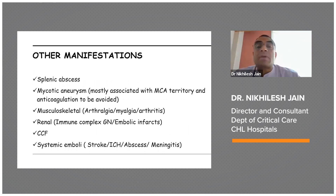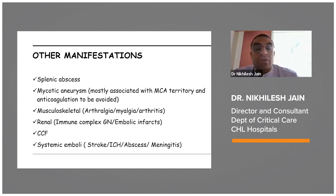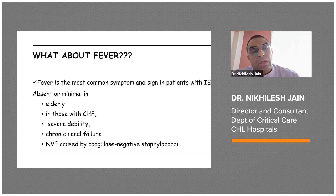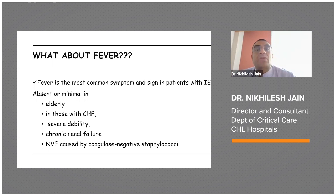Embolic digital infarcts and Roth spots — oval retinal hemorrhages — can occur. Other manifestations include spleen involvement, mycotic aneurysms most commonly in the cerebral artery territory where anticoagulation must be avoided, musculoskeletal manifestations such as arthralgia, myalgia and arthritis, renal manifestations including immune complex glomerulonephritis or embolic infarcts, congestive cardiac failure, and systemic emboli including strokes, intracerebral bleeds, brain abscesses, or meningitis. Fever is the most common symptom but may be absent or minimal in elderly patients, those presenting with congestive cardiac failure, severe debility, chronic renal failure, or native valve endocarditis caused by coagulase-negative staphylococci.